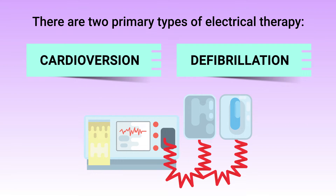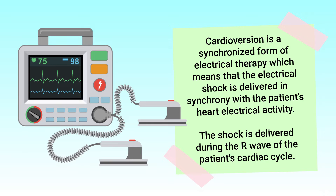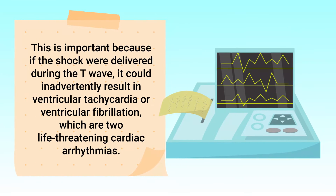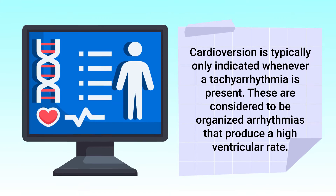For this video, we're specifically focusing on cardioversion. As previously mentioned, cardioversion is a synchronized form of electrical therapy, which means the electrical shock is delivered in synchrony with the patient's heart electrical activity. More specifically, the shock is delivered during the R-wave of the patient's cardiac cycle. This is important because if the shock were delivered during the T-wave, it could inadvertently result in ventricular tachycardia or ventricular fibrillation, which are two life-threatening cardiac arrhythmias.